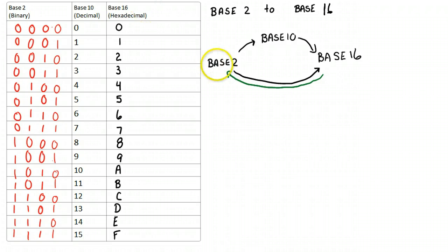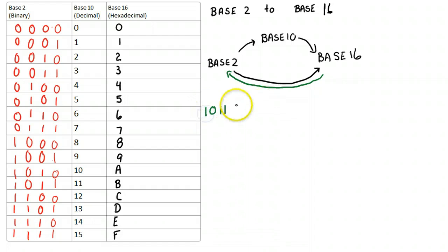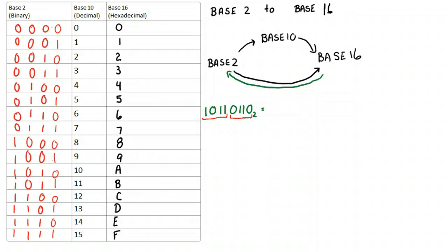So let's do a really quick example of base 2 to base 16 to make sure we understand it. Let's take the number 0110 1011 0110 in base 2. I simply take my red marker and I underline groups of 4 starting on the right-hand side, and then I just convert those groups of 4 into hexadecimal.